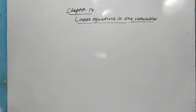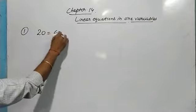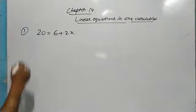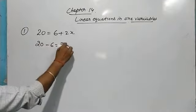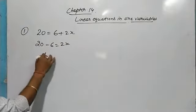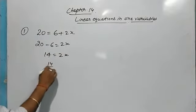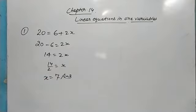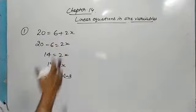Let us solve some questions. The first question is: 20 = 6 + 2x. We bring 6 to this side: 20 − 6 = 2x, that is 14 = 2x. So x = 14/2 = 7. This is the solution. If we put x = 7, both sides will be equal.